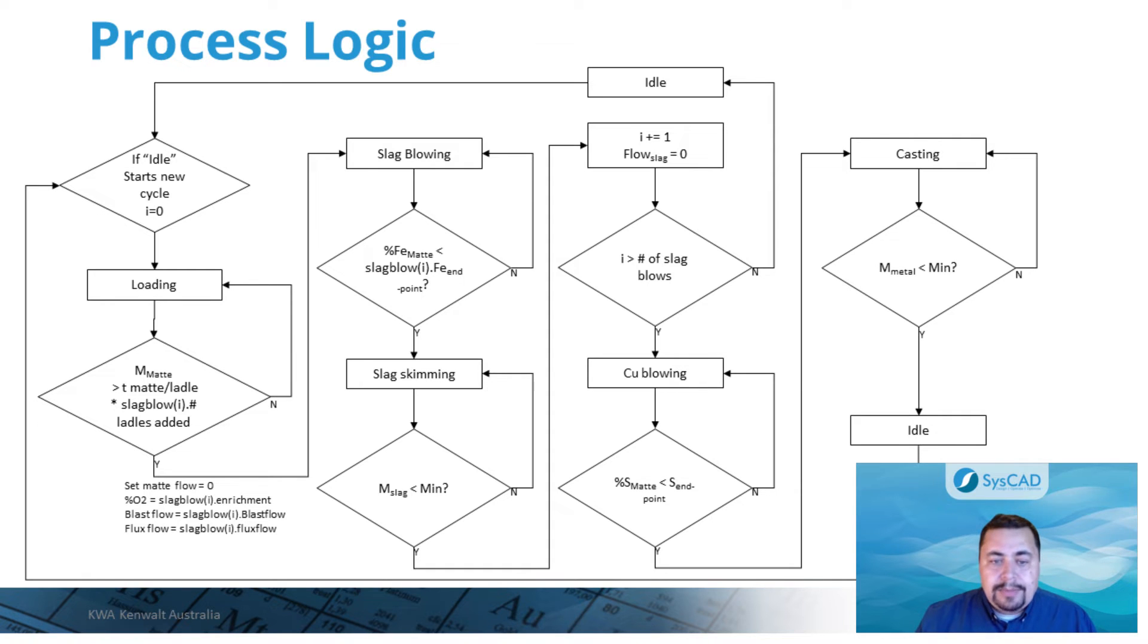Once all of the slag blows are completed, the copper blow starts. Typically, the iron endpoint of the last slag blow is sufficiently low such that flux addition during copper blow might not be required.